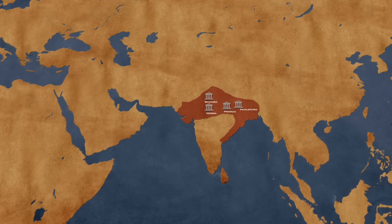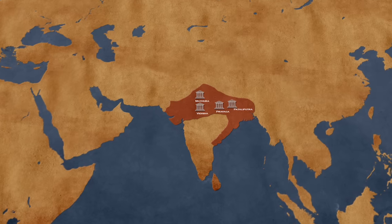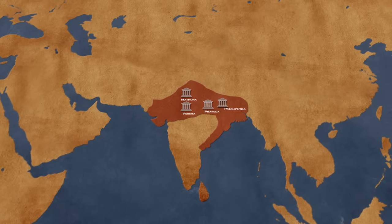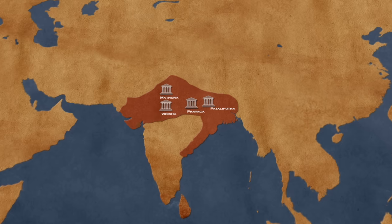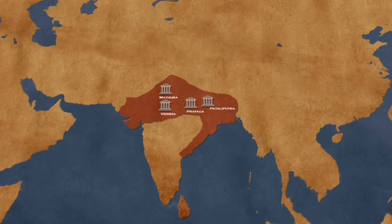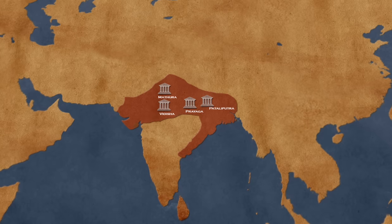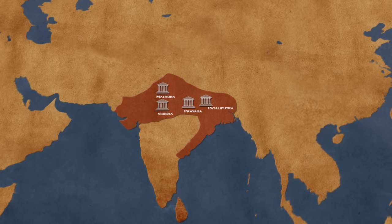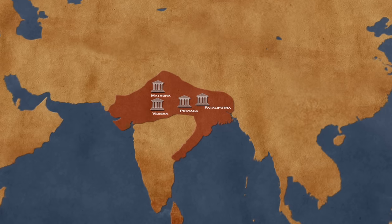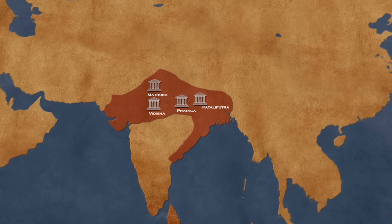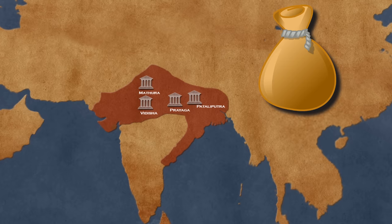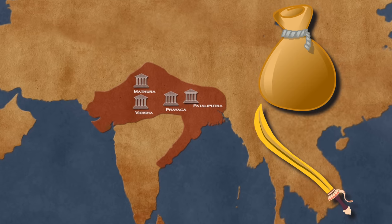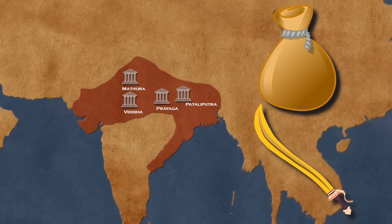In exchange, the Gupta Empire imported horses from Central Asia, fabrics from Tibet, and slaves from the Roman Empire. Crimes were severely punished depending on their severity, from financial fines to amputations or even death in some cases, according to the laws of Manu.